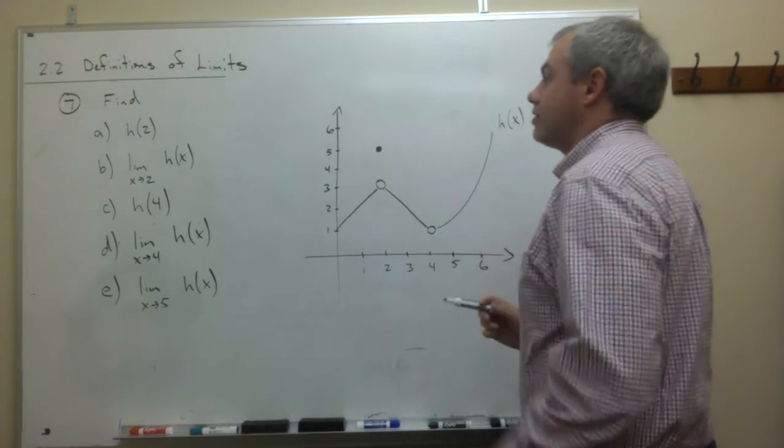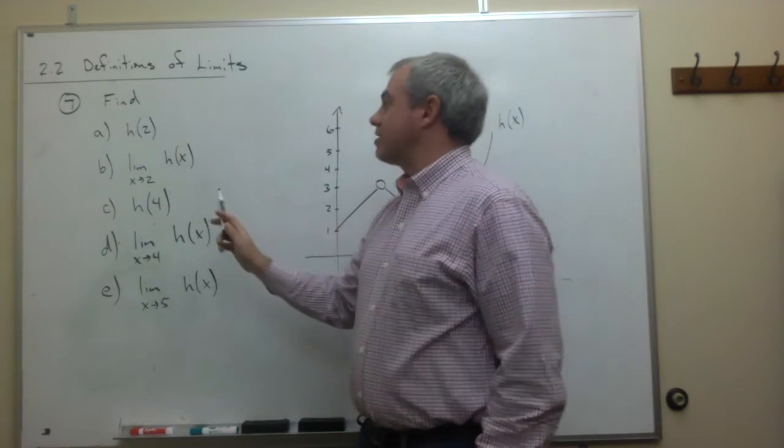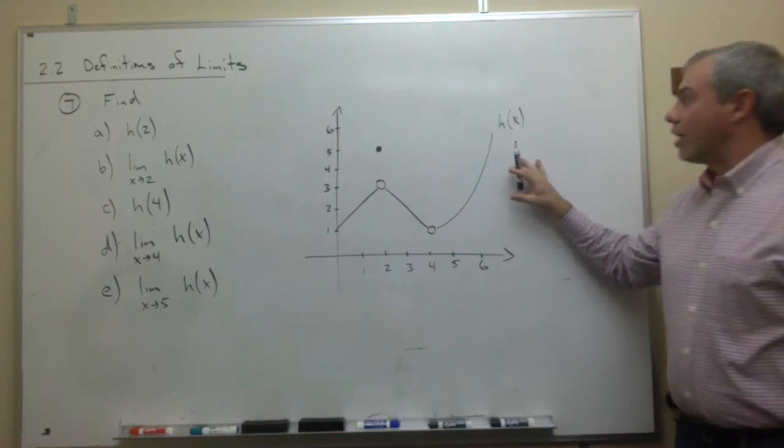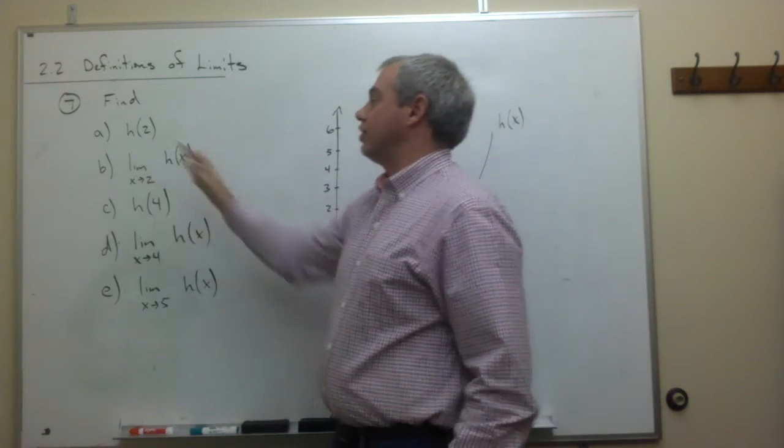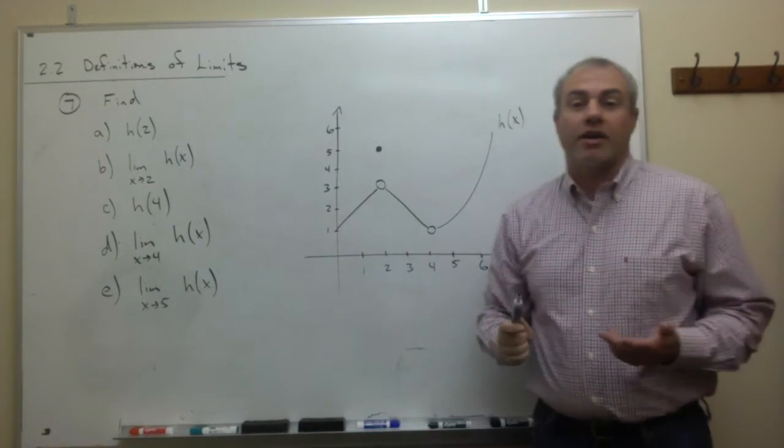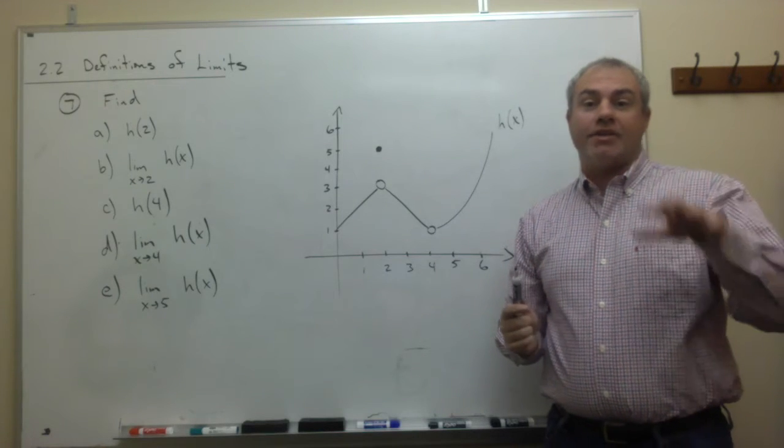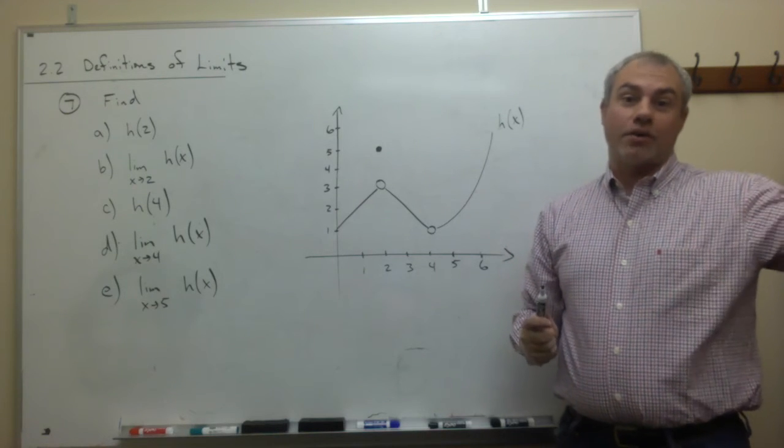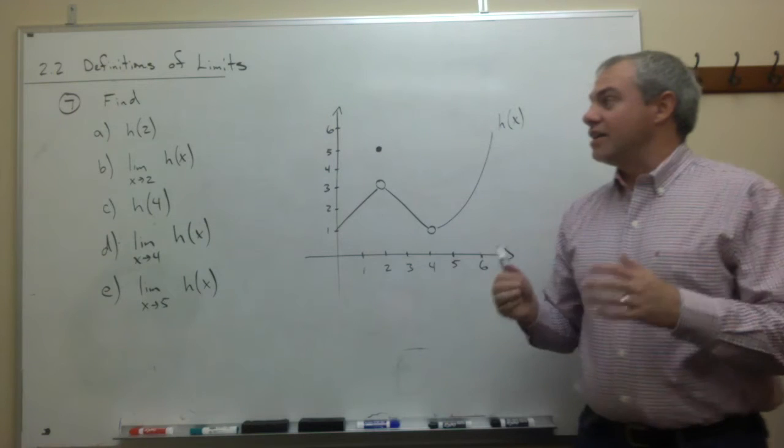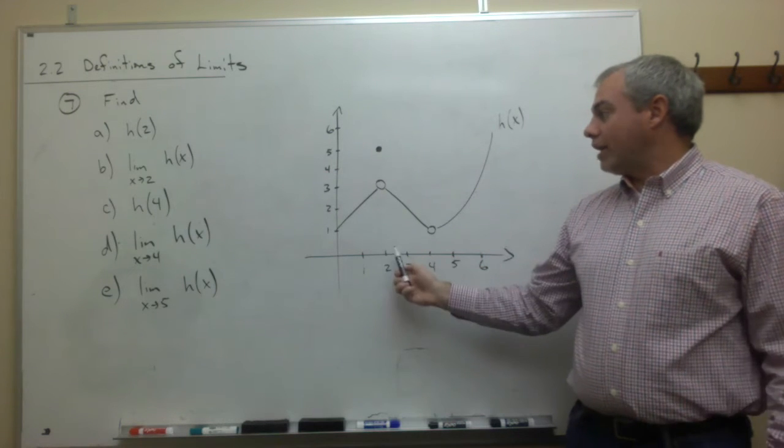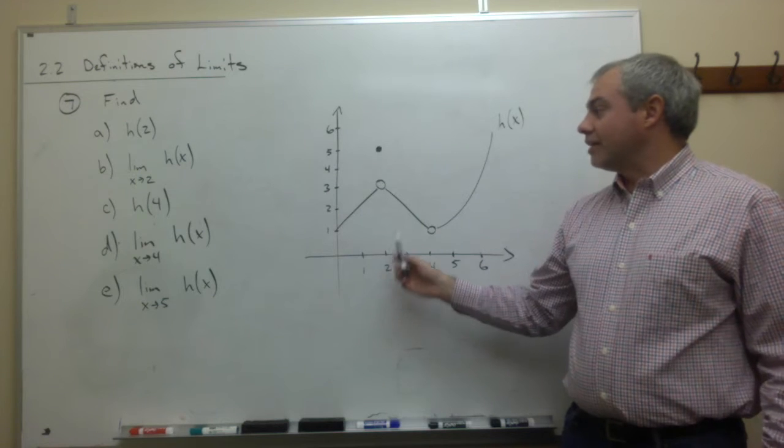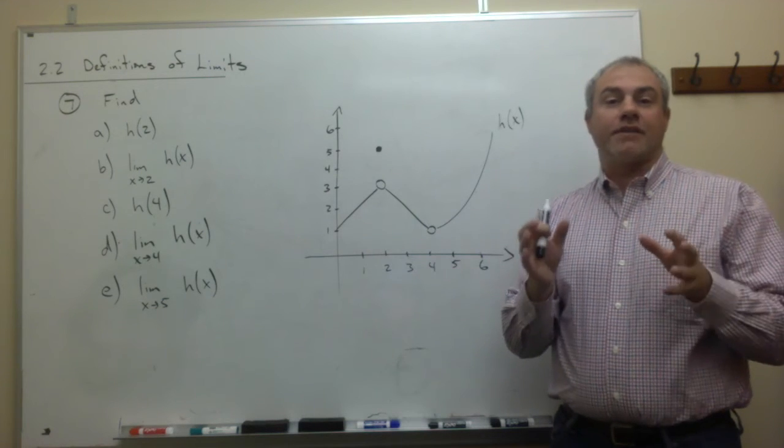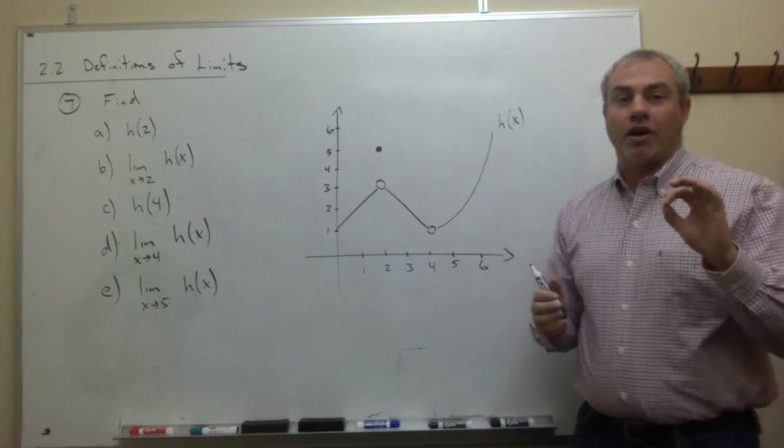So the first thing that we're asked to find given this graph h of x is what is h of 2. Now the key thing to remember here is we're looking at things like h of 2 and the limit as x goes to 2 of h of x. The point h of 2 and the limit, those are completely different things. And if we keep that straight, we're on a good track.